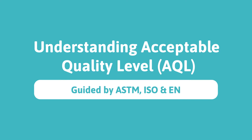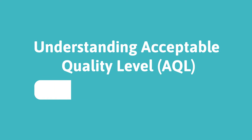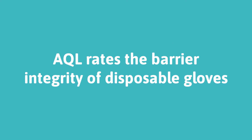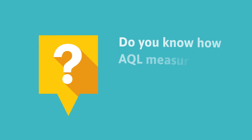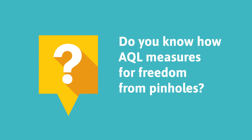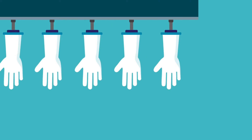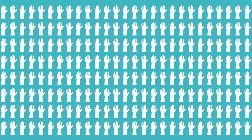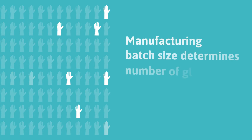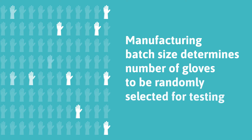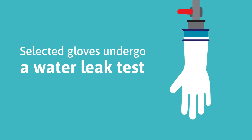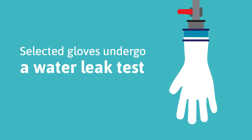Acceptable Quality Level, or AQL, is a recognized industry standard for freedom from pinholes to rate the barrier integrity of disposable gloves. AQL measures quality by determining the highest number of pinhole defects deemed acceptable in a manufacturing run. A sample size dependent on the manufacturing batch size determines the number of gloves to be randomly selected for testing. The selected gloves then undergo a water leak test to check for pinhole defects.